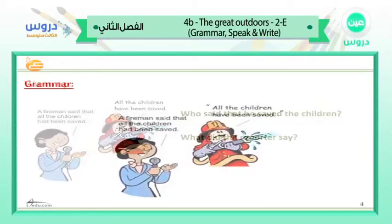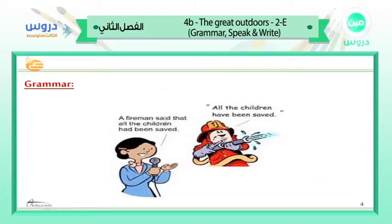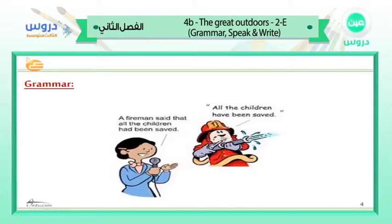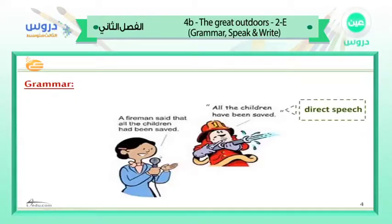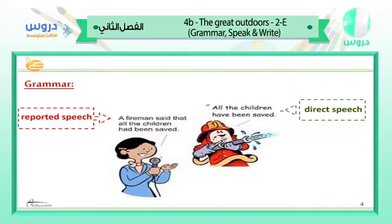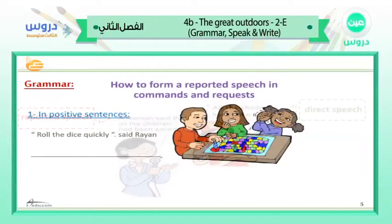The reporter said: 'A fireman said that all the children had been saved.' We are going to speak about reported speech. 'All the children have been saved' — this is direct speech, uttered directly from the fireman's mouth. Then the reporter said: 'A fireman said that all the children had been saved.' This is reported speech — she's reporting what others said.